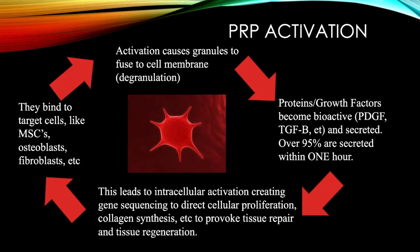Activating PRP causes granules in the platelet to fuse to the cell membrane — that's called degranulation. It then activates the proteins and growth factors, which get secreted, and most of this takes place within one hour. This leads to intracellular activation in the recipient, which creates gene sequencing that directs cellular proliferation, collagen synthesis, and ultimately provokes tissue repair and regeneration.